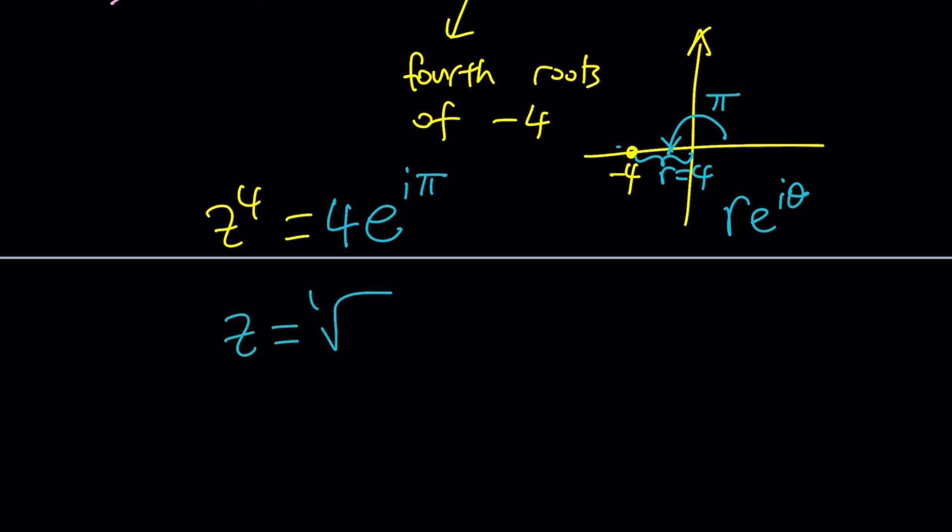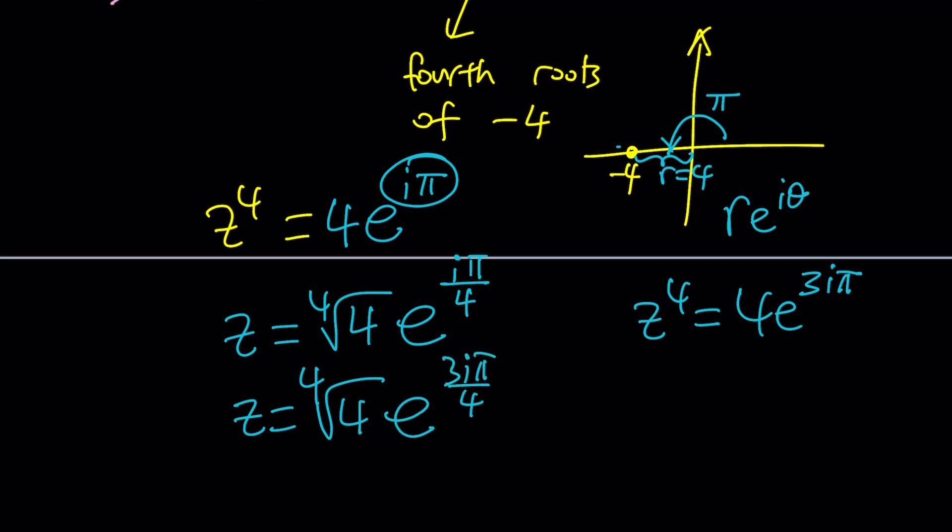If you take the fourth root of the r first, and then to take the fourth root of e to the i pi, you're just going to raise it to the power one-fourth, which is going to give you this number right here. We'll talk about what that means in a little bit, but that's going to be one of the solutions, z. And then another solution can be found by just increasing this to 3 pi. So what happens if z to the fourth is equal to 4 times e to the power 3 i pi. When you divide by 4, you're going to get the fourth root of 4 e to the power 3 i pi over 4.